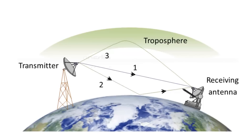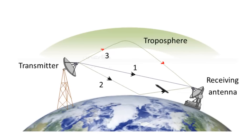This wave propagation is called space wave propagation. It can occur via direct transmission through space, reflection from earth, or reflection from the troposphere. Space wave propagation is also called line of sight propagation. The line of sight distance is the distance between the transmitting antenna and the receiving antenna at which they can see each other.